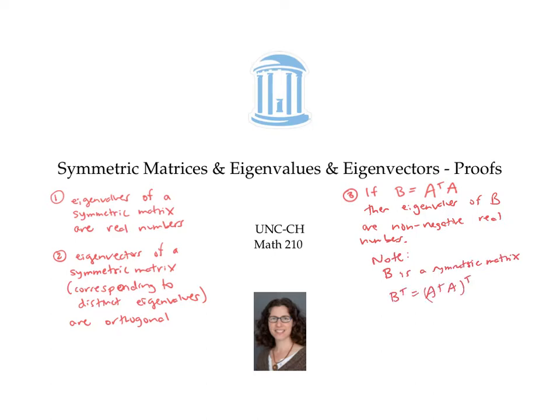That's because if we take B transpose, which is (A transpose A) transpose, that's the same as A transpose times A transpose transpose, since the transpose of a product is the product of the transposes in the opposite order. And A transpose transpose is the same as A. So B transpose equals B, meaning B is symmetric. By fact one, the eigenvalues are real numbers, but fact three says they'll actually be non-negative real numbers.